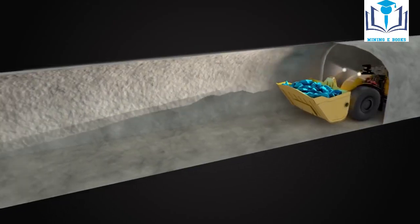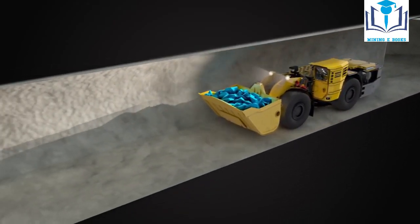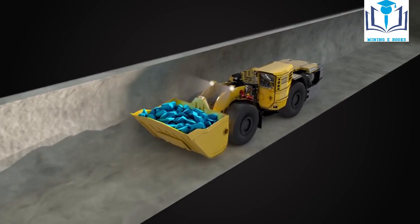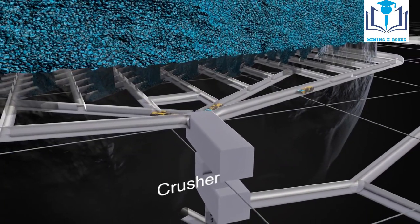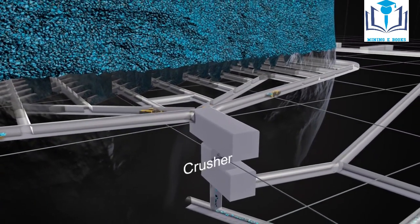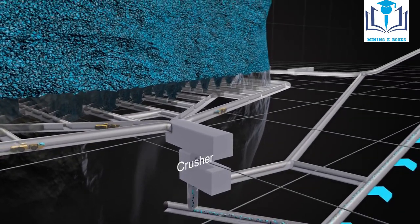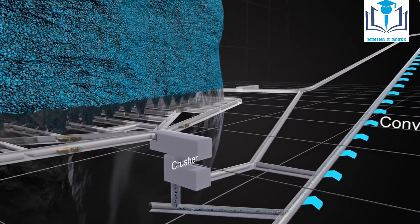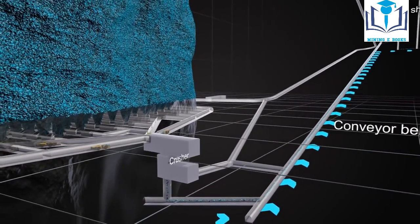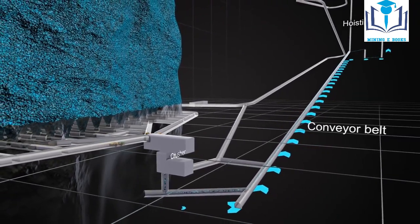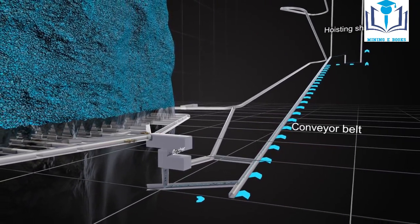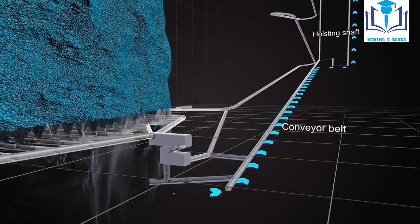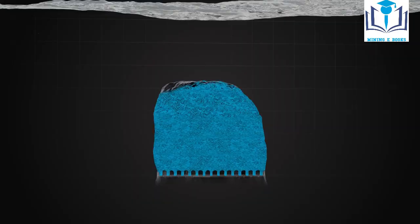Rock is loaded from the draw points and can be dumped into ore passes connected to a haulage level or directly into a crusher. A variety of transportation methods can be employed for transporting ore to surface. The fragmentation of the ore and the crushing requirements are key factors influencing the choice of method.